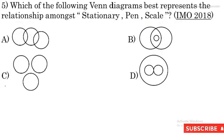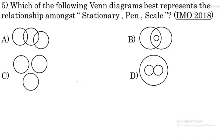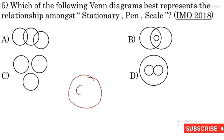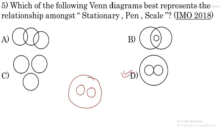Question 5: Which Venn diagram represents the relationship among stationary, pen and scale? Stationary items include things you use in reading and writing — books, pen, scale. So the big circle represents stationary items. Pen represents one circle and scale is another circle, both part of stationary items. This type of relationship is the right answer. D option is the right option for this question.